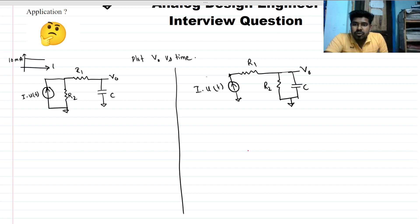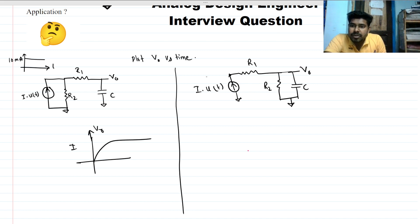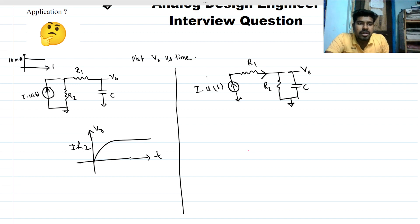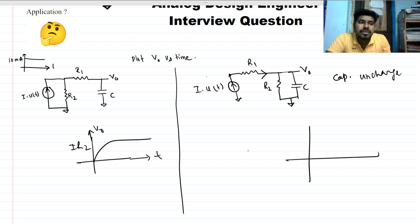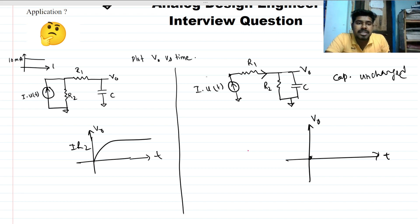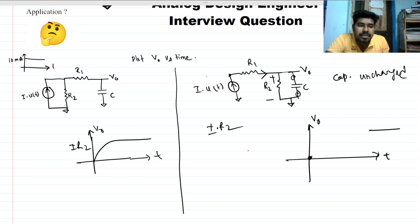Let's solve the second question. The waveform for the first circuit is as shown, with maximum output voltage I times R2. Now for the second circuit: a constant current is flowing through R1, and the capacitor is initially uncharged. At t equals zero the capacitor is a short, so the output voltage is zero. At steady state the capacitor is open circuit, and the output is the voltage drop across R2, which is I times R2.